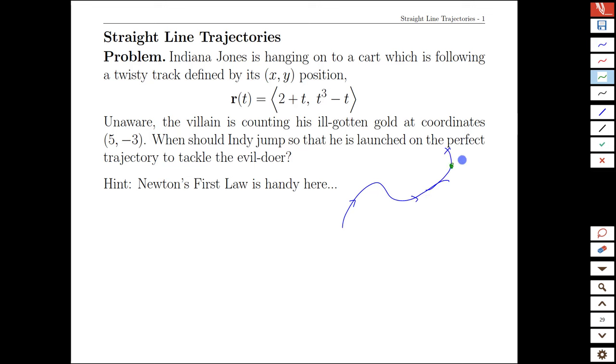...imagine something being let go, dropped off, or thrown from there, what we would see is that Newton's first law will kick in. Newton's first law says, unless acted on by a force, an object will continue to move in a straight line. So if we can capture the velocity at launch, we can then define a parametric curve for the post-launch straight line trajectory that follows.